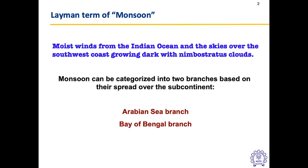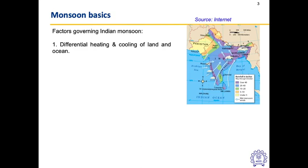Let's get into the basics of the monsoon — the factors that govern it. The first is the differential heating and cooling of land and ocean. We all know that land heats and cools faster than the ocean, so when it is heated up, winds blow from ocean to land. This differential heating is one of many important factors, but since it's always present we won't dwell too much on it.